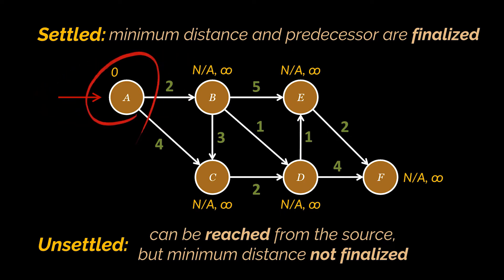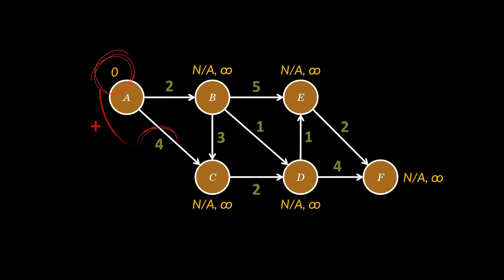The first thing we need to do is pick the node with the lowest known distance and then evaluate all its unsettled adjacent nodes. The idea is to add the edge weight that separates our source from its adjacent node to the source distance, then compare it to the destination's distance. For example, for node B, 0 plus 2 is lower than infinity, so the new distance for node B is 2 and the new predecessor is A. The same applies to node C.